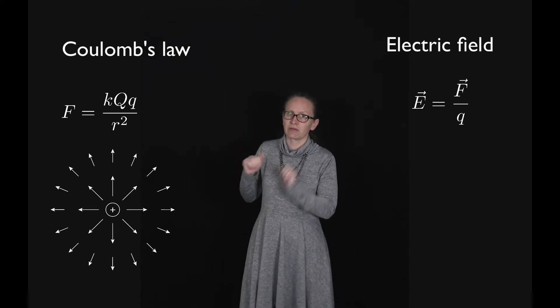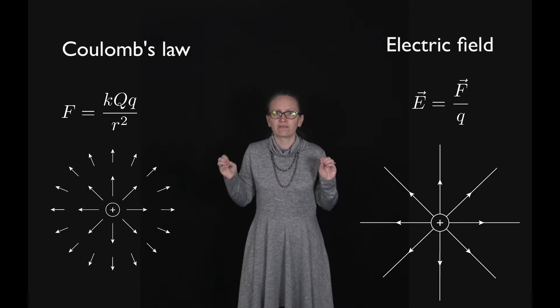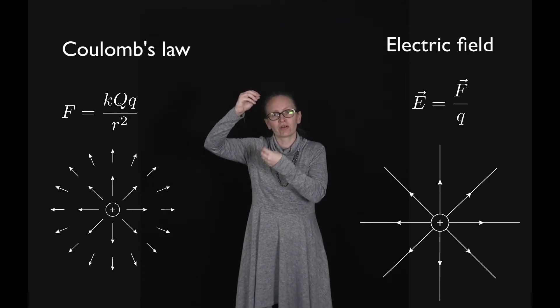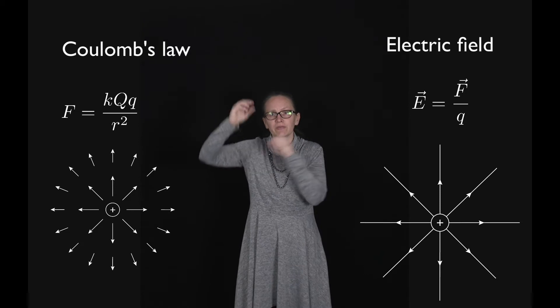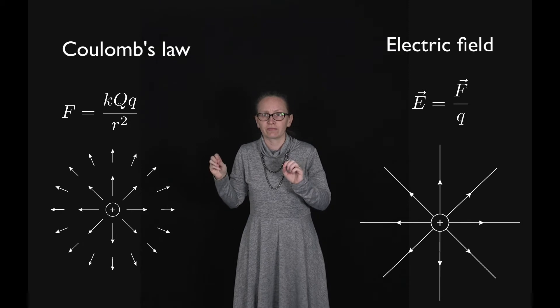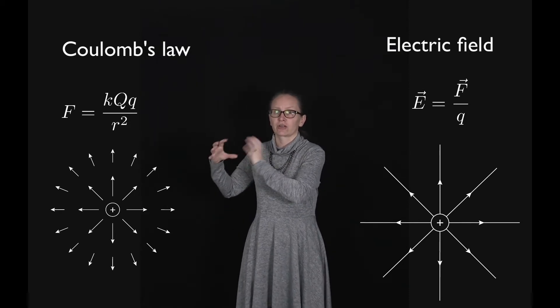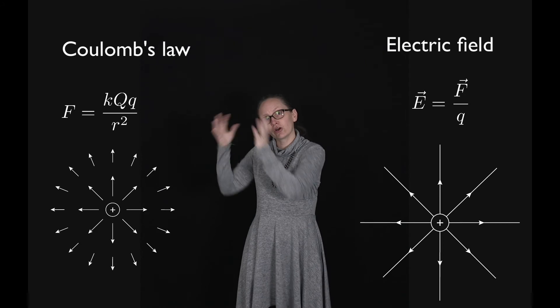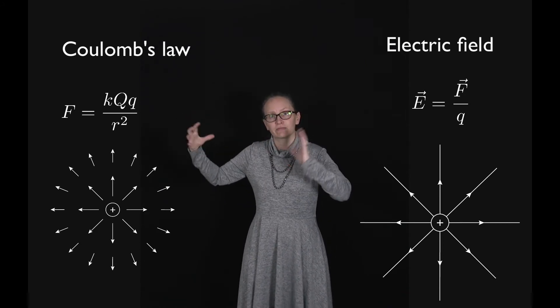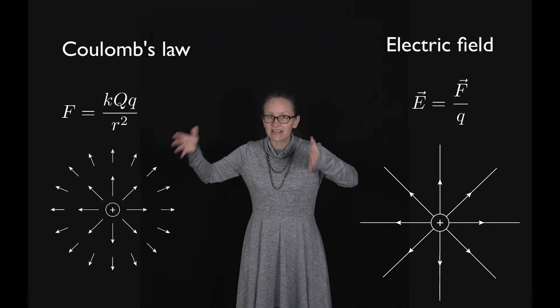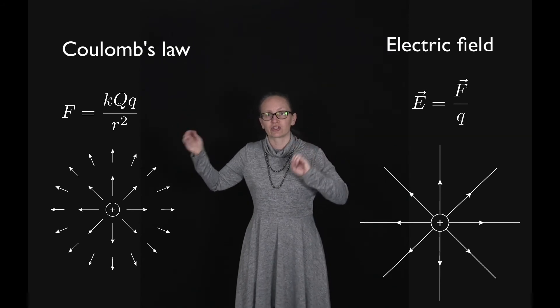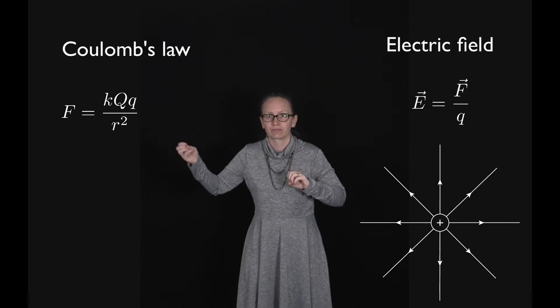So to represent this, we draw electric field lines. Electric field lines represent that they go in the direction of the force on a positive test particle, and the density of the field lines represents the strength of the electric field. So close to our positive charge plus Q, the lines are much closer where we've got a stronger field. And then as we move further away from the charge which is generating that electric field, we have more distance between our electric field lines to show that it's a weaker electric field.